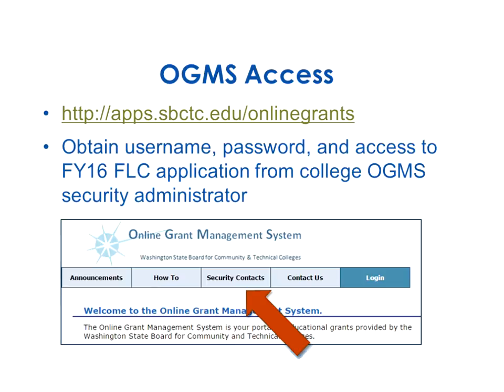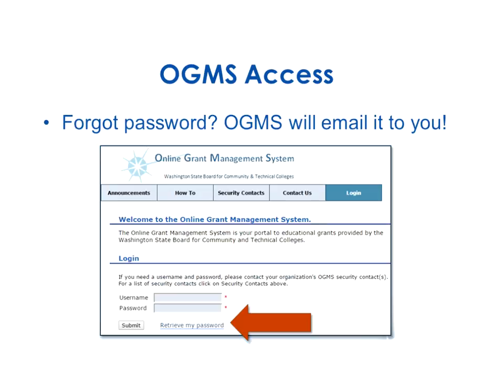Even if you already have an OGMS user account, you still have to contact your college's OGMS security administrator to get access to the 2015-16 FLC application — access from last year's application does not carry over. If your college's grants office submits applications for you, let them know about this year's application. On the OGMS login screen there is also a Forgot My Password / Retrieve My Password link.